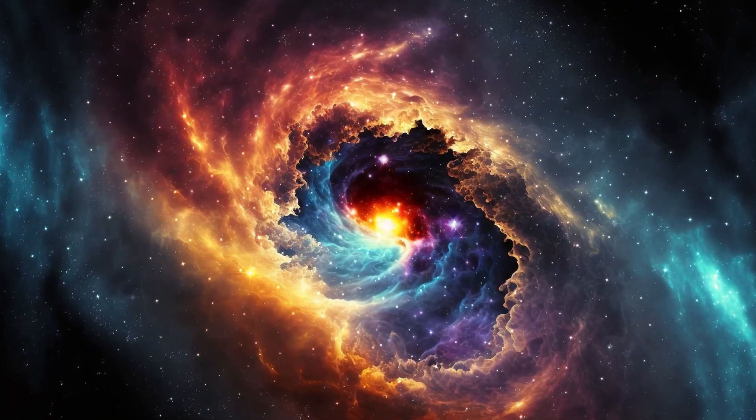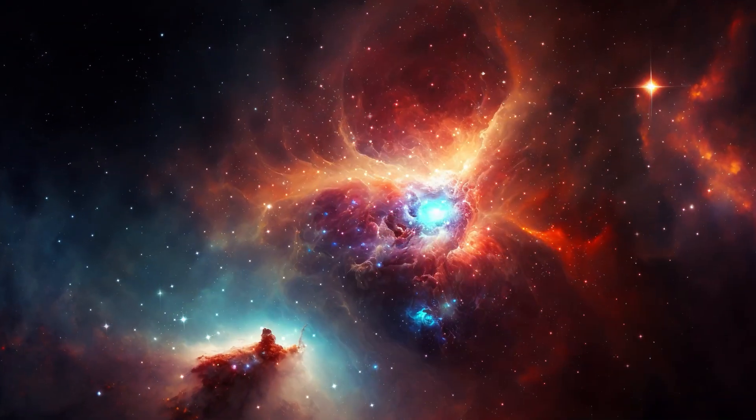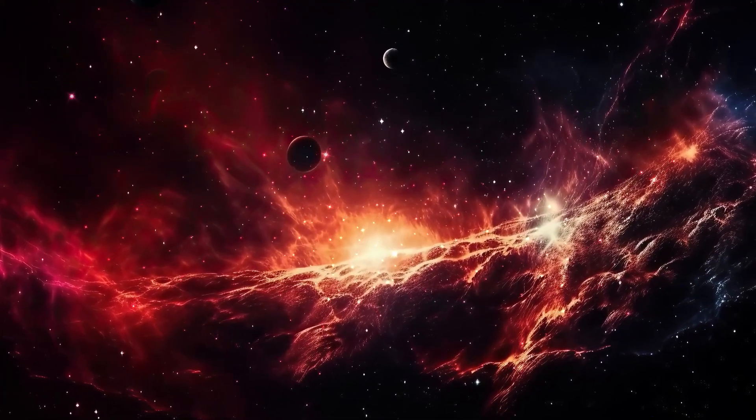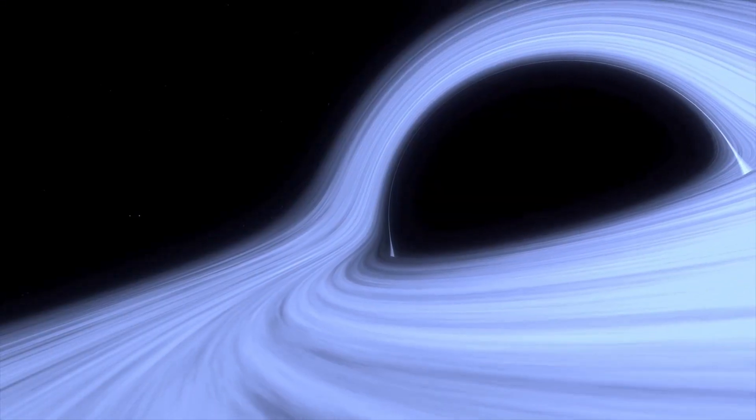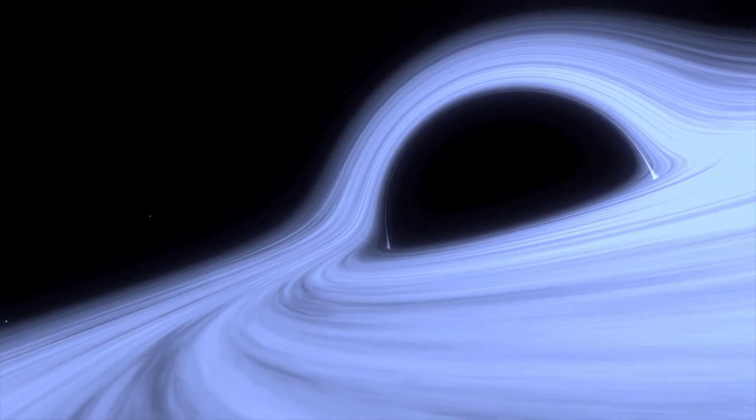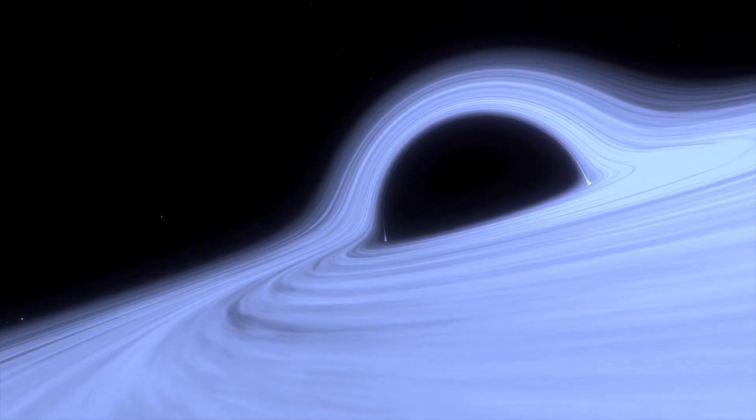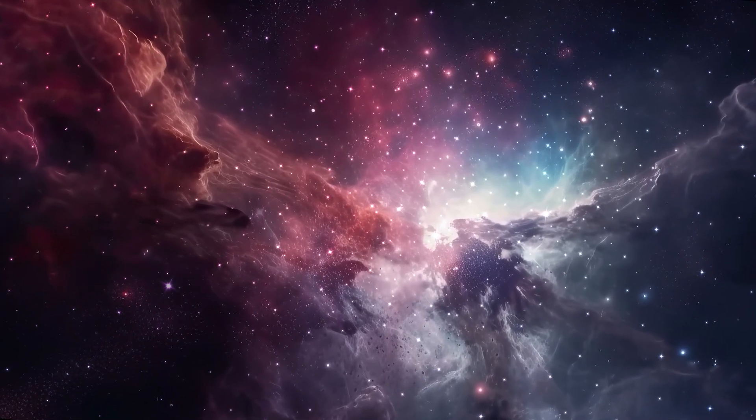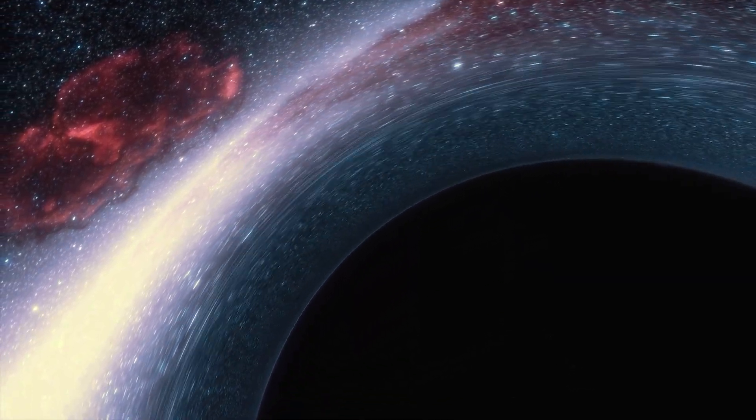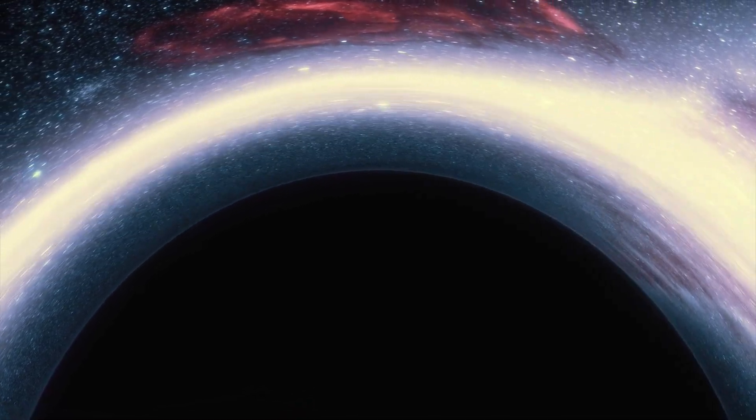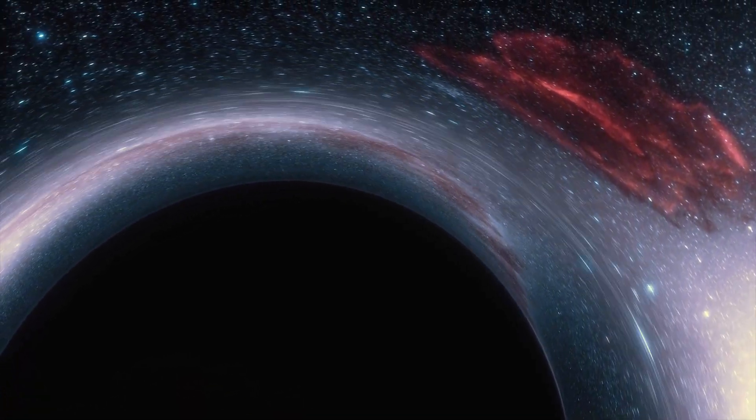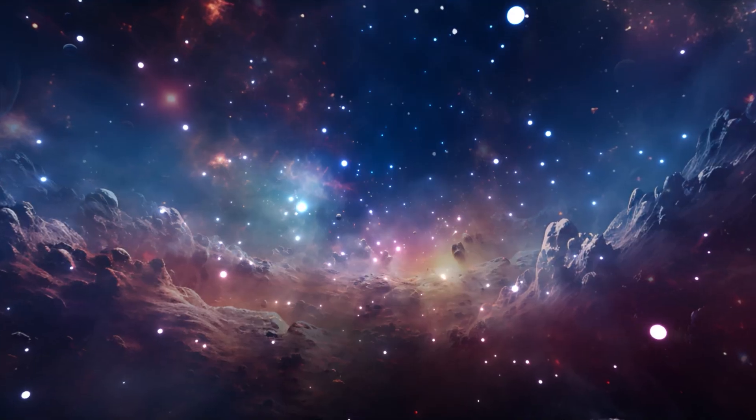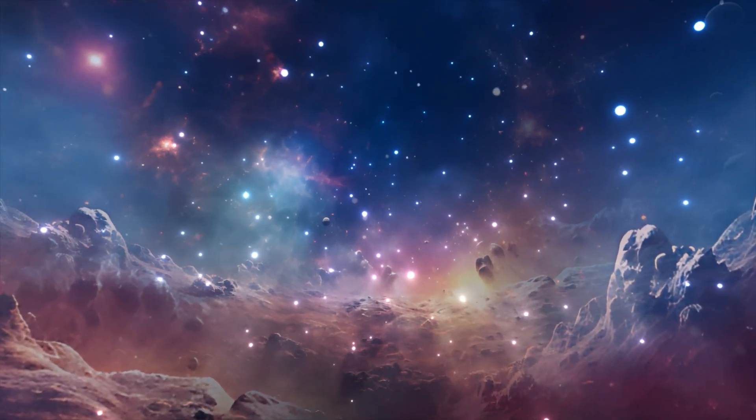Black holes can have a significant impact on their surroundings. Their immense gravitational pull can affect the orbits of nearby stars and even strip away material from them. As matter spirals into a black hole, it forms an accretion disk, heating up and releasing tremendous amounts of energy. Some black holes also emit powerful jets of high-energy particles and radiation, which can influence entire galaxies. When black holes merge, they create ripples in space-time known as gravitational waves. Supermassive black holes found at the centers of galaxies play a crucial role in the formation and evolution of galaxies themselves, helping shape their structure and regulate star formation.